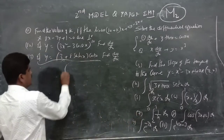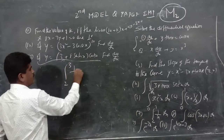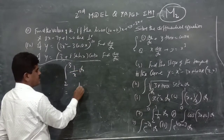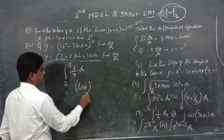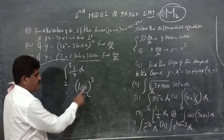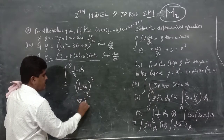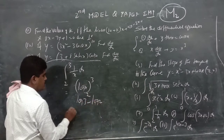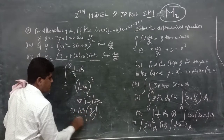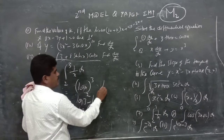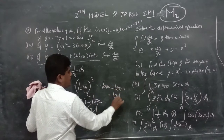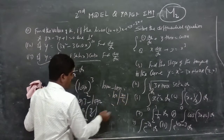Seventh problem: evaluate the integral of 1/x dx from 2 to 3. The integration of 1/x is log x, evaluated from 2 to 3. This gives log 3 minus log 2. Using the formula log m minus log n equals log(m/n), the answer is log(3/2).